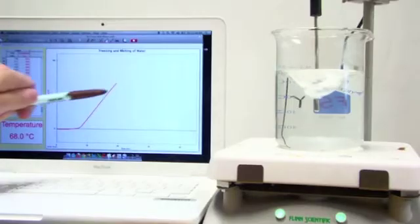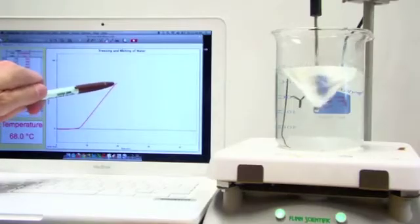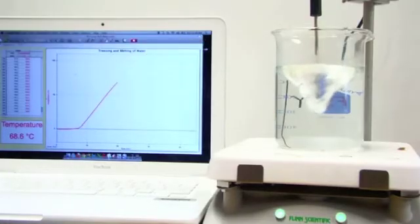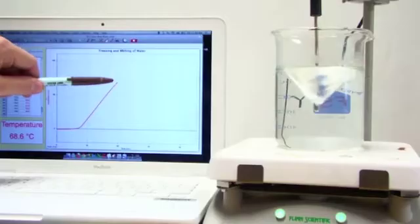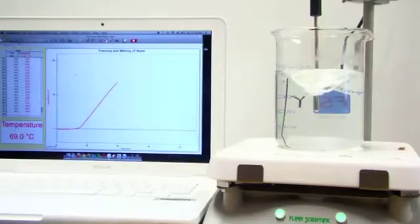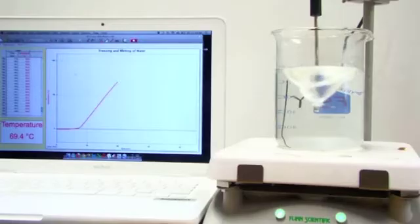Right around this point, around 70 degrees centigrade, we just start to see steam forming. That's the little particles of water with enough energy to escape the surface of the water. Not a lot of them yet, because we're not at the boiling point of water yet, but it's hot enough that some of the molecules, some of the particles of water can escape the surface.